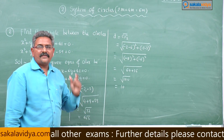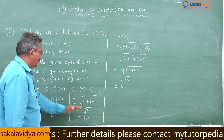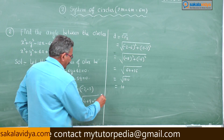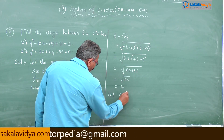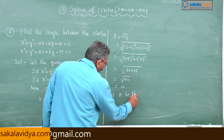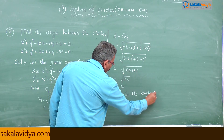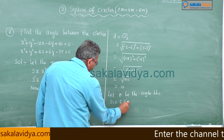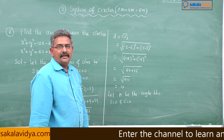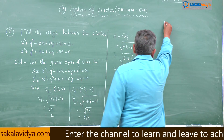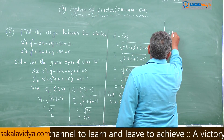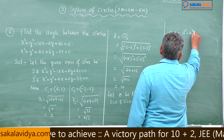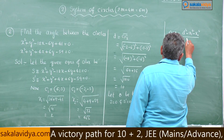Now we have sufficient data — r1, r2, and d — so we can find theta. Let theta be the angle between S equals 0 and S' equals 0. Recalling the formula: cos theta equals d squared minus r1 squared minus r2 squared, divided by 2 r1 r2.